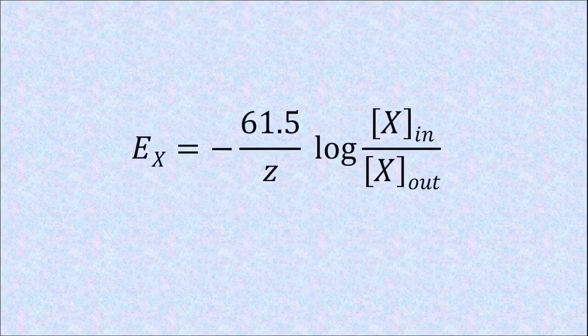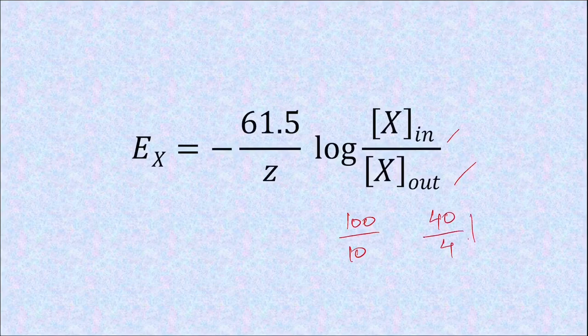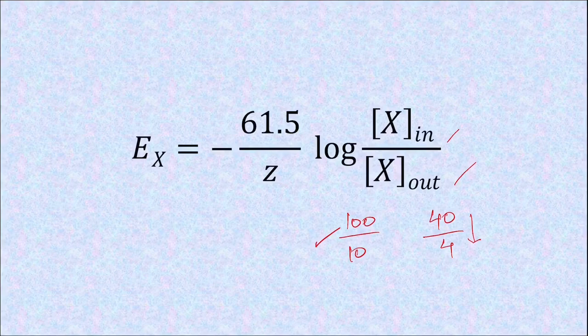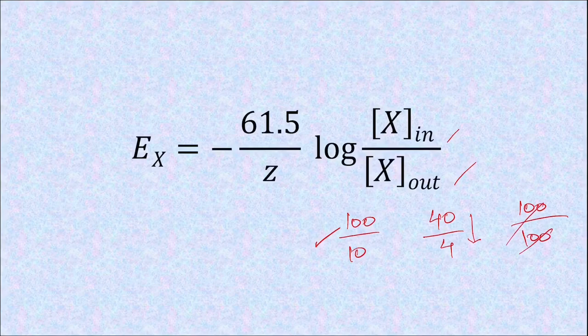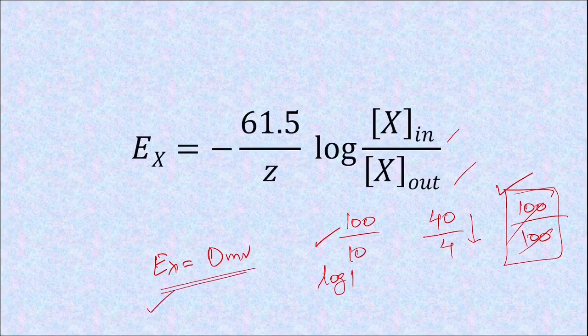If you observe the equation closely, you will understand that the concentration gradient is important, more than the actual numbers. So 100 by 10 will give the same results as 40 by 4. The gradient ratio is more important than the absolute numbers. And if the concentration on both sides are equal, that is both sides are, let's say, 100, then this becomes log 1, and log 1 is 0, so the equilibrium potential becomes 0. So if there is no concentration gradient, there will not be any electrical gradient also.